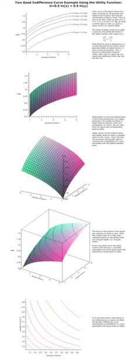An example of a utility function associated with perfect substitute indifference curves would be u(x, y) = αx + βy. If two goods are perfect complements, then the indifference curves will be L-shaped. Examples of perfect complements include left shoes compared to right shoes: the consumer is no better off having several right shoes if she has only one left shoe. Additional right shoes have zero marginal utility without more left shoes, so bundles differing only in the number of right shoes are equally preferred. The marginal rate of substitution is either zero or infinite.